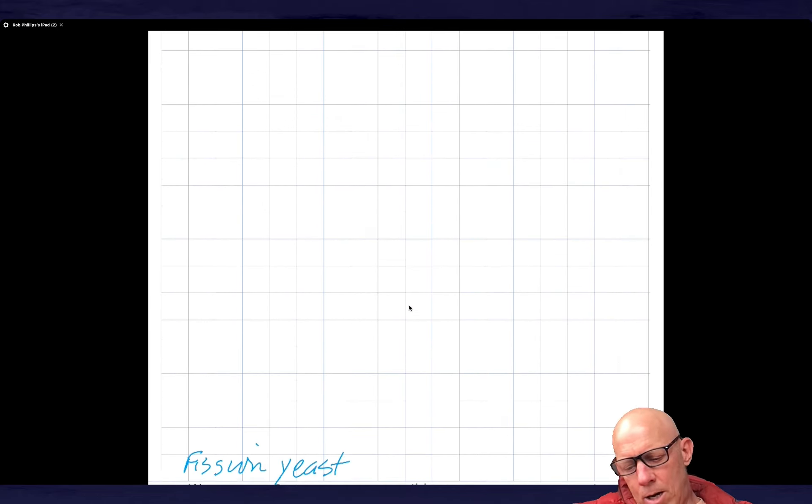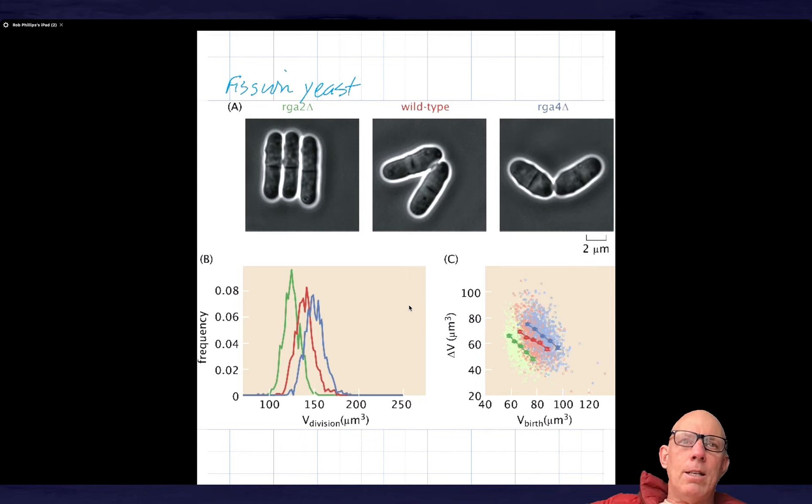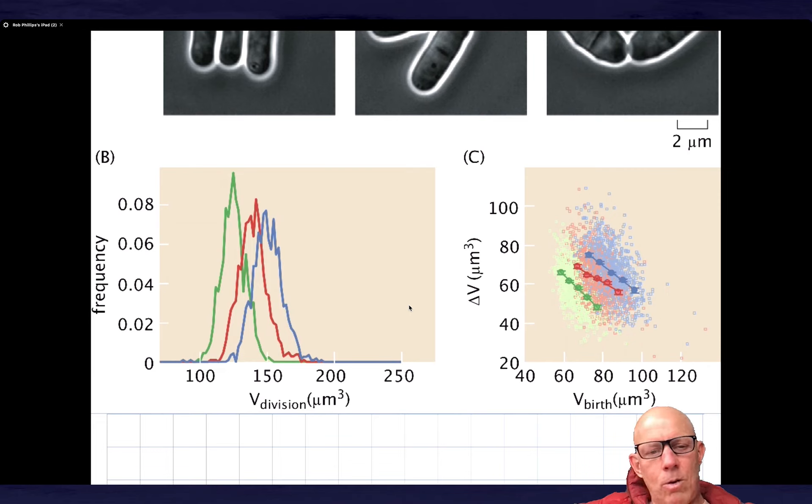I want to hearken back also to the work from Fred Chang's group in the context of fission yeast. Unlike the adder model, they find this correlation shown in the lower plot, which tells us that the amount of added material is a function of the volume at birth. So that seems to be a sizer model. That's also extremely interesting.